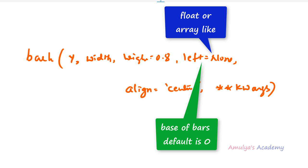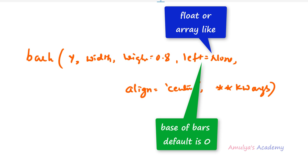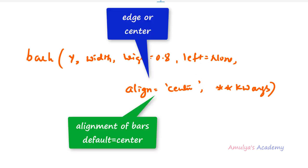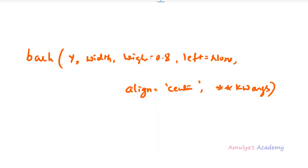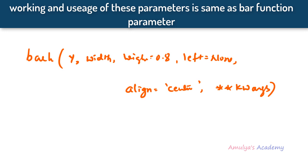In the bar function we used bottom; here we use left, and the default is 0. Next is align, with a default value of center — it is optional. You can use align as center or edge. Then we have keyword arguments to change the color, edge color, or line width of the bars, same as the bar function.